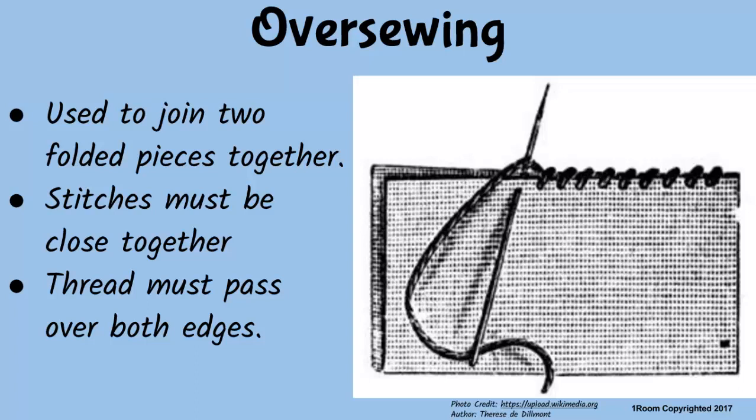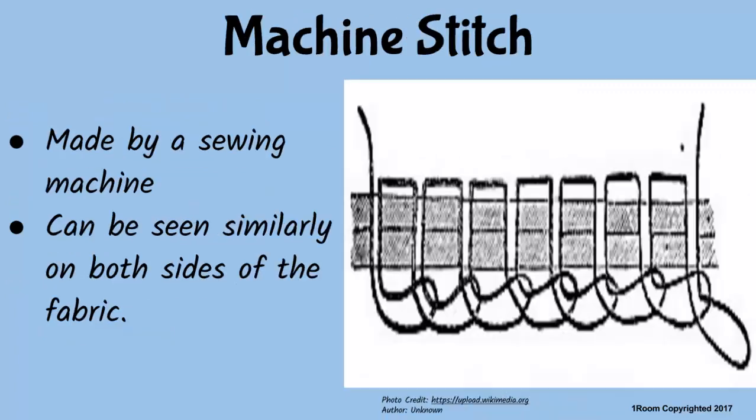Next is oversewing, which are stitches used to join two folded edges together. These stitches must be close together and must pass through the two folded edges. We are going to work them practically after this, except the machine stitch. Machine stitches are made by a sewing machine and are made such that the pattern looks alike on both sides of the fabric.